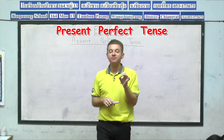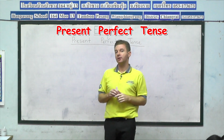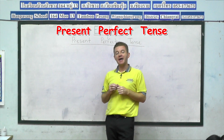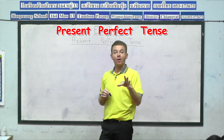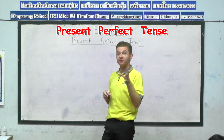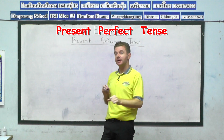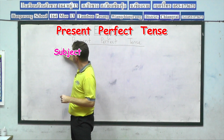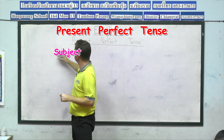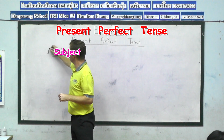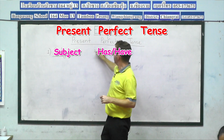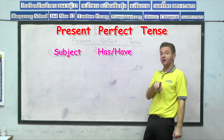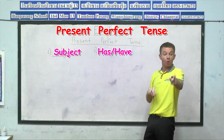And when we constructed those sentences guys, there were four main groups of words. Can anybody remember what the first one was, beginning with S? Subject. Yes. When we want to talk about an affirmative sentence in the present perfect tense, the first thing we need is to describe who it is — that's what we mean by subject. And then, depending on the subject, we have a choice of two words: has or have.